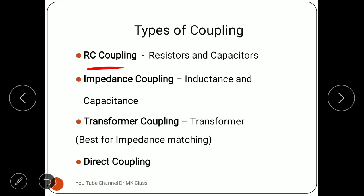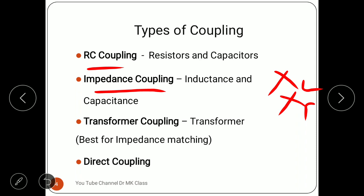The second type is impedance coupling, where inductance and capacitance are used. Inductance and capacitance have impedance XL and XC respectively. These components are used for coupling between stages.